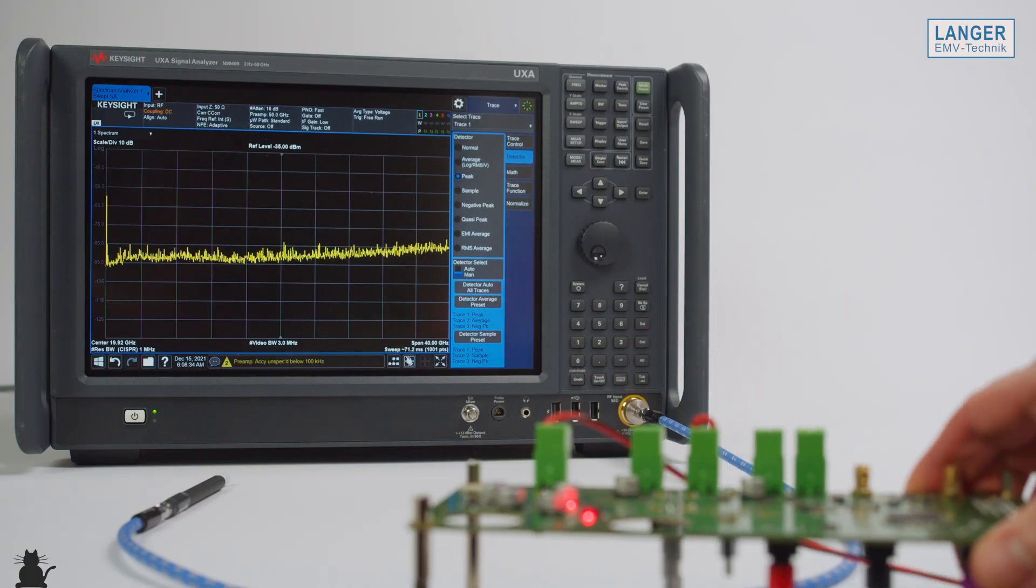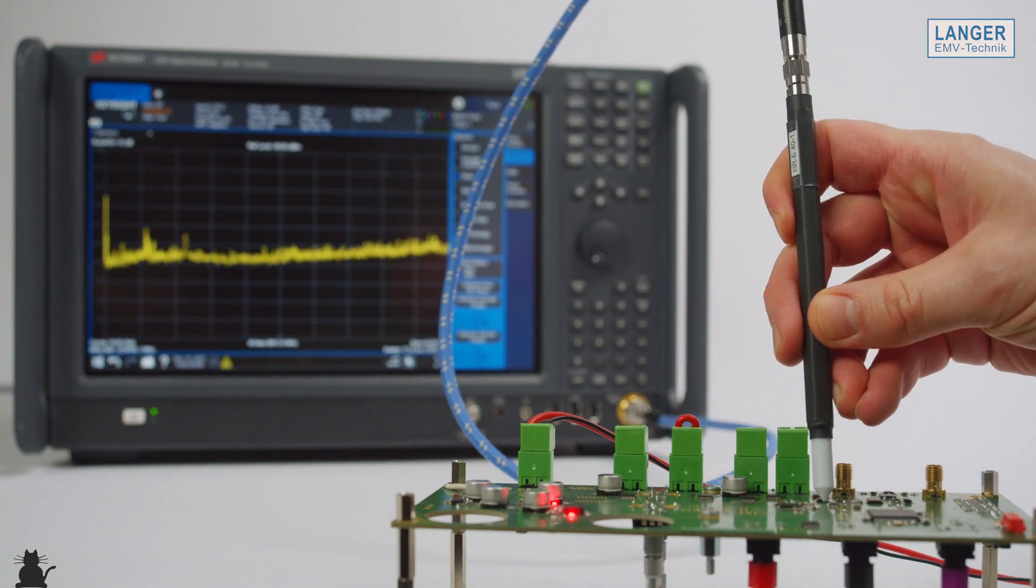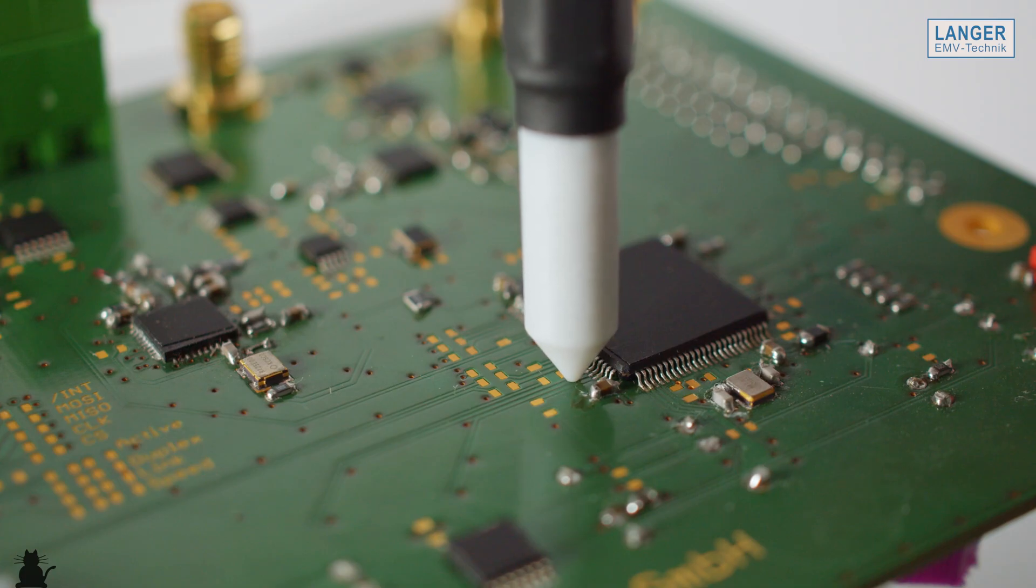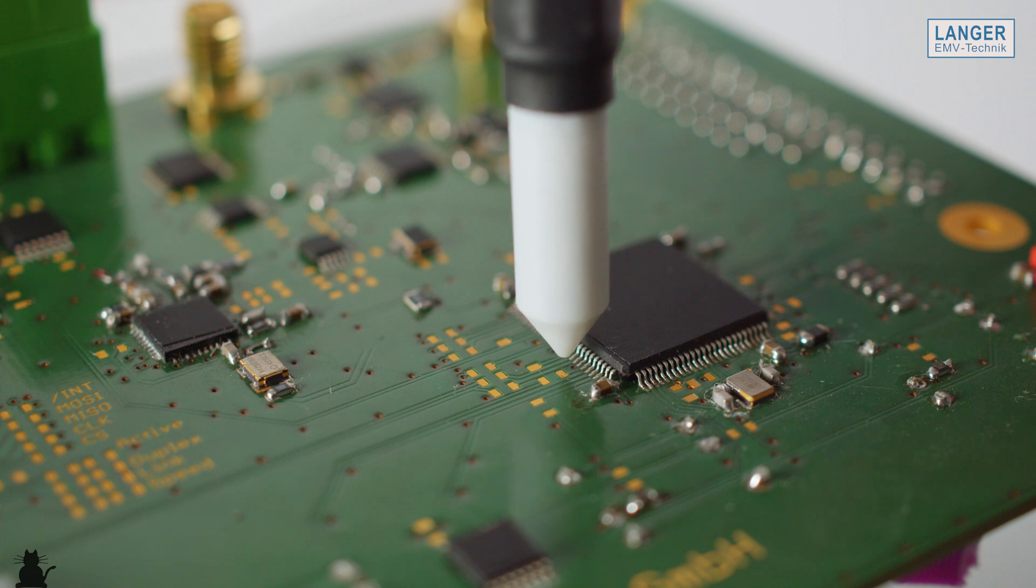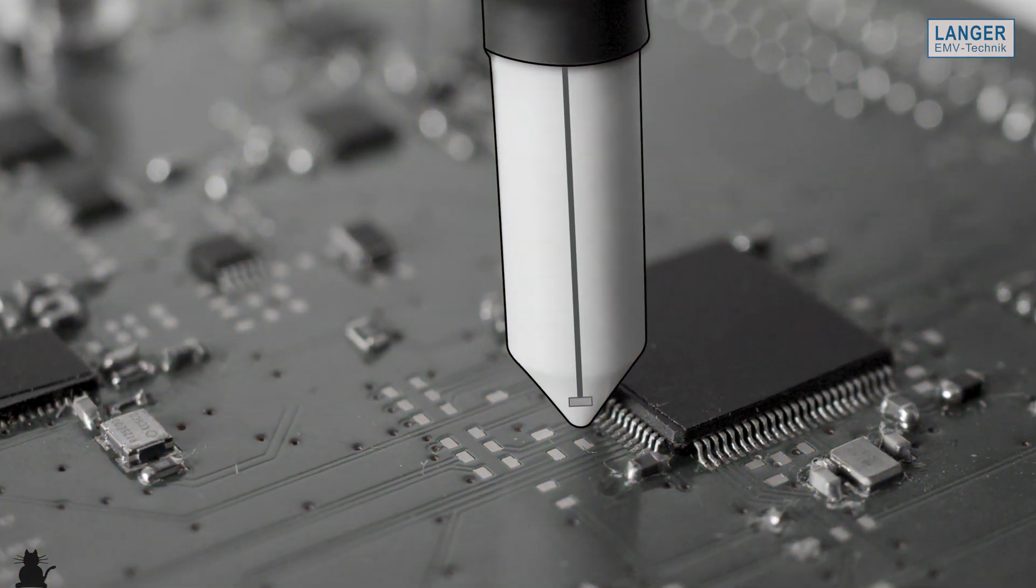For measurement, the probe can be used in different ways. For a hand-held measurement, the probe tip should be placed directly, vertically and centrally on the structure to be measured. This ensures between the structure to be measured and the measuring electrode a defined distance of 0.5 mm.